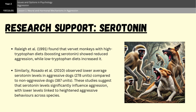Research on non-human species has long highlighted the link between serotonin and aggression. Raleigh et al. in 1991 studied vervet monkeys and manipulated their diets to alter serotonin levels. Monkeys fed on a diet high in tryptophan, which increases serotonin, showed reduced aggression, while those on a low tryptophan diet exhibited higher levels of aggression. Similarly, Rosado and colleagues in 2010 looked at dogs, comparing 80 aggressive dogs with 19 non-aggressive dogs, and found that the aggressive dogs had lower serotonin levels, averaging around 278 units, compared to 387 units in the non-aggressive group. Studies like this strongly support the idea that serotonin plays a crucial role in regulating aggression.